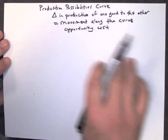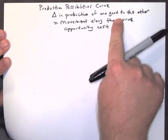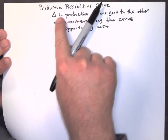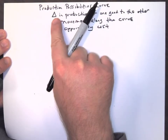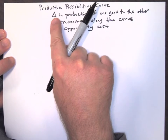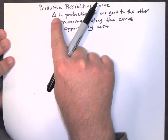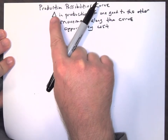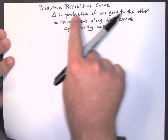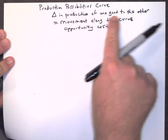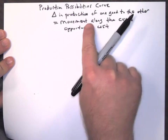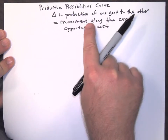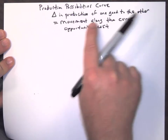What we're going to look at today is the production possibilities curve with a change — I use delta or a triangle to symbolize change — a change in production of one good to the other, movement along the curve.